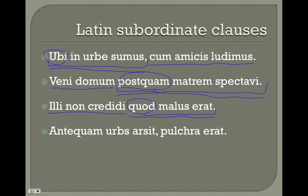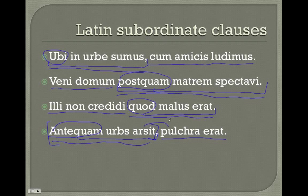Last example: 'Antequam urbs arsit, pulchra erat.' We begin with our subordinating conjunction 'antequam.' We move to our verb — the editor has helpfully added a comma. So 'antequam urbs arsit' is our subordinate clause, and 'pulchra erat' is our main clause: 'Before the city burned, it was beautiful.' When you encounter a subordinating conjunction, look for the verb, block off that chunk, and treat it as its own clause subordinate to the main clause — it will show you the circumstances, the cause, or the time of the main clause.